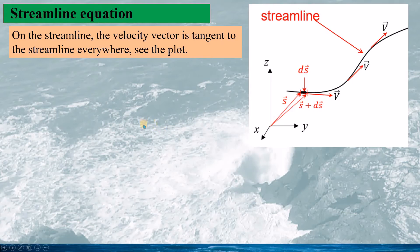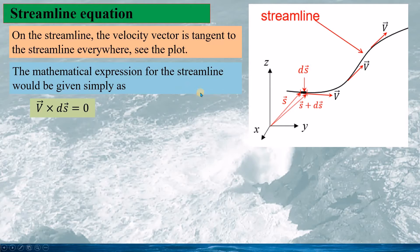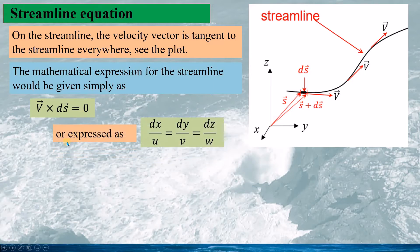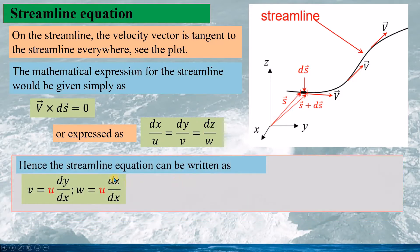The general Bernoulli's equation is only valid on the streamline. The streamline is the line on which the velocity vectors are tangent to the line everywhere. The mathematical expression for the streamline is given as vector v cross d-vector s equals zero, meaning v and ds are in the same direction. This streamline equation can also be written in an alternative form.